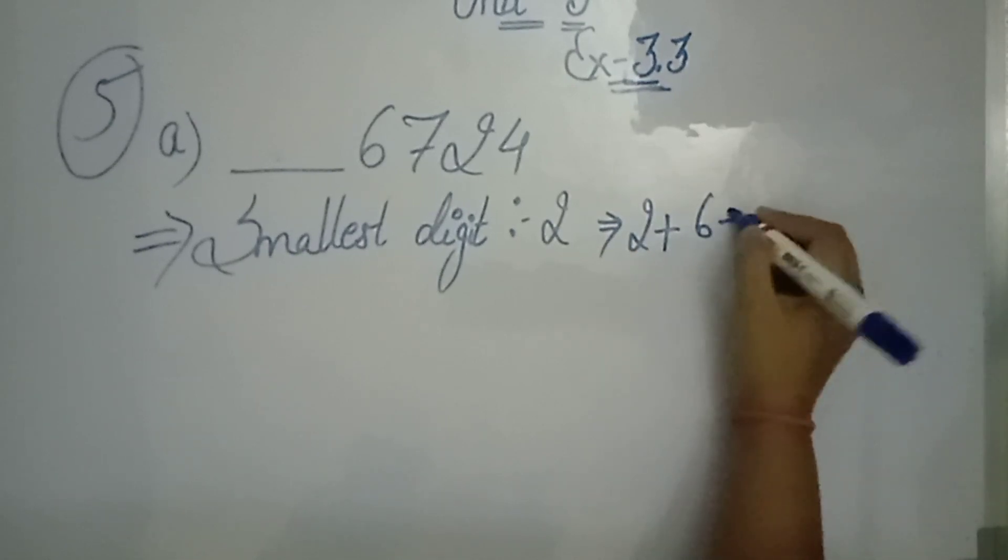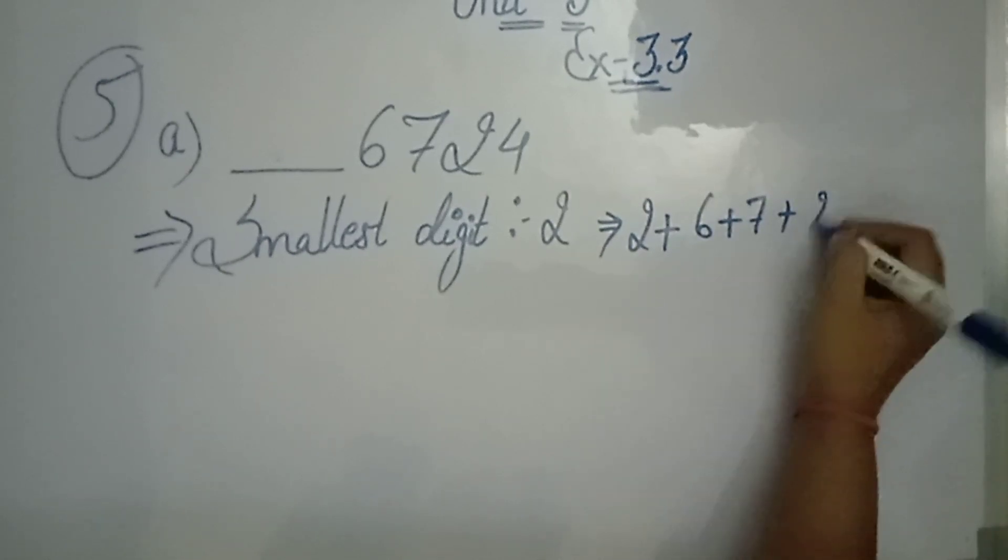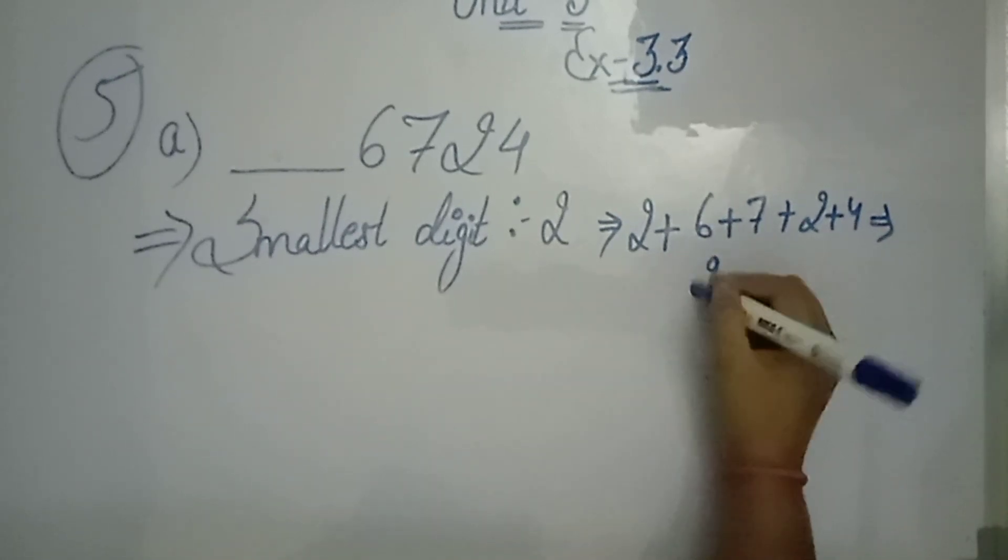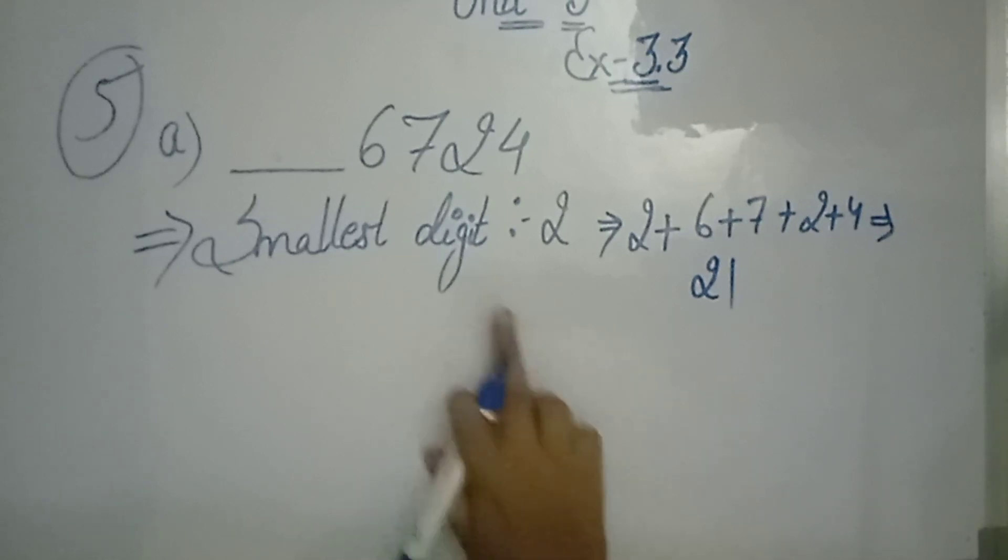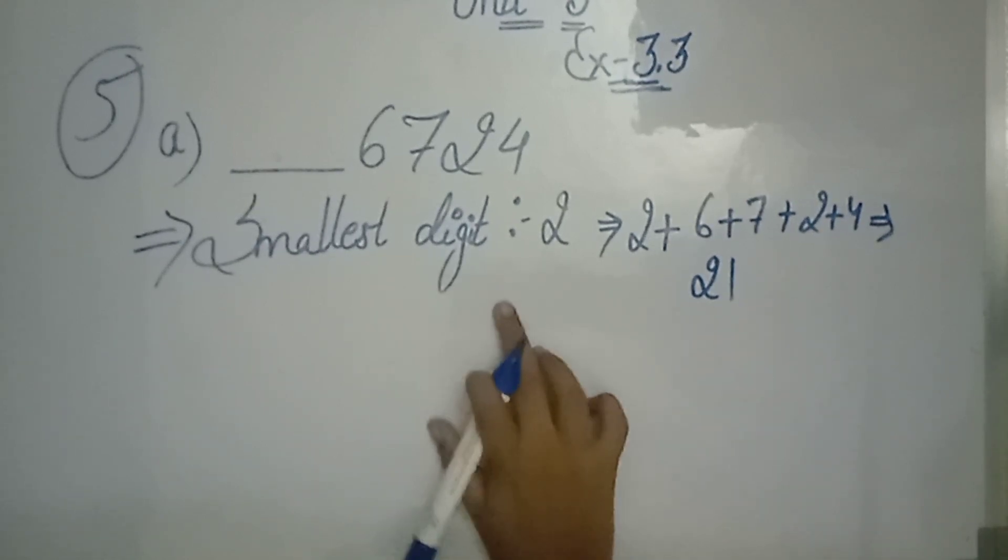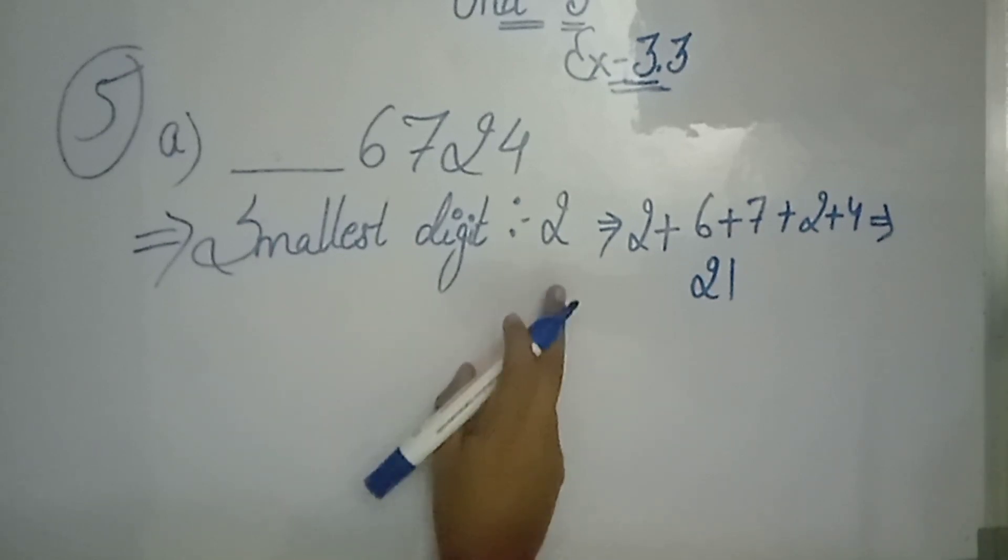Okay, 6 plus 7 plus 2 plus 4, so how much is it? If you will plus it, then it is 21. So 21 is divisible by 3, it means our smaller digit is 2.